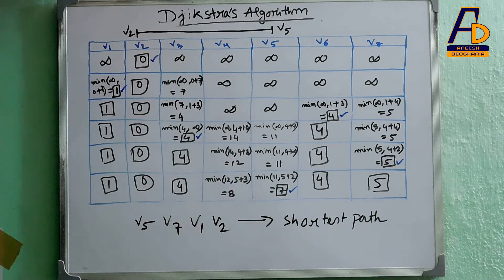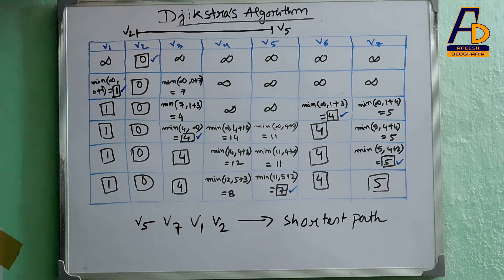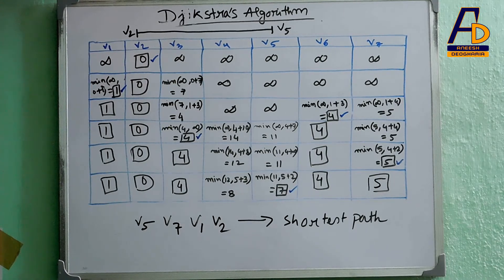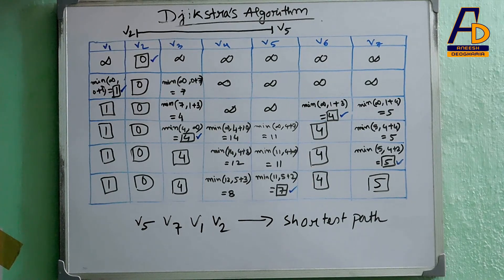This was how you can find the shortest path and the shortest distance between two given vertices using Dijkstra's algorithm. That was all for this video. Thank you for watching. Stay tuned to my channel for upcoming videos, subscribe if you haven't yet, and press the bell icon to get notified whenever I upload future content. Thank you.